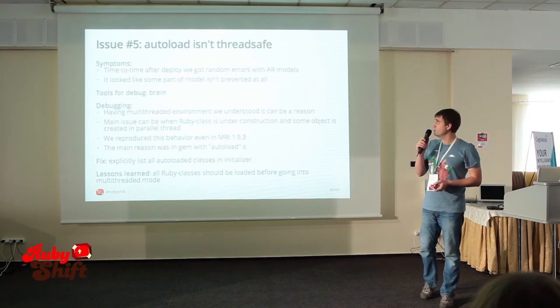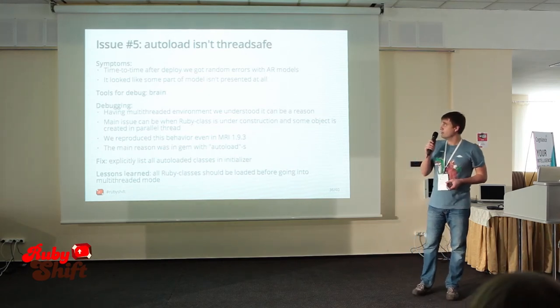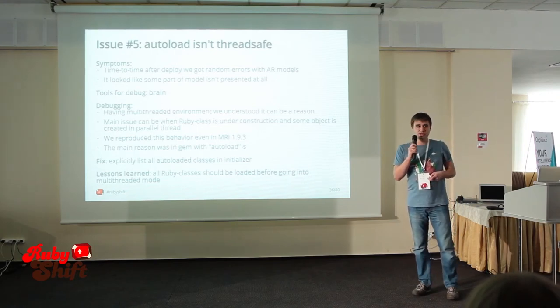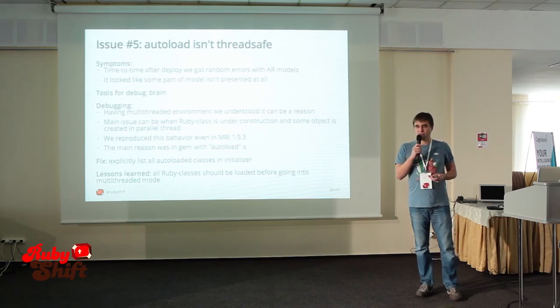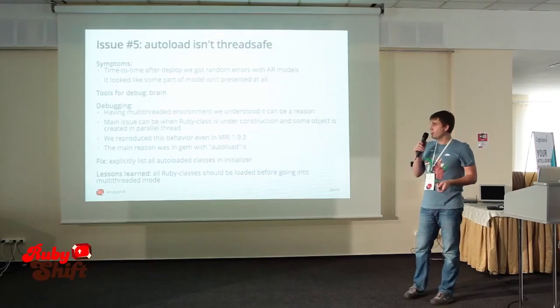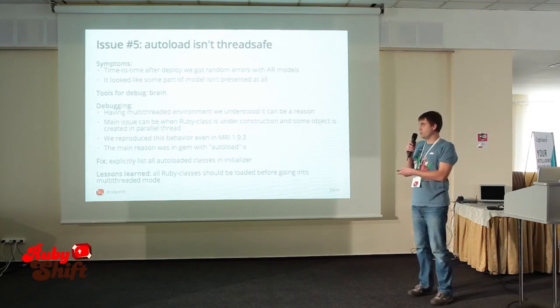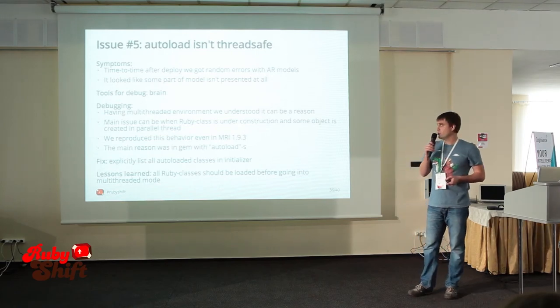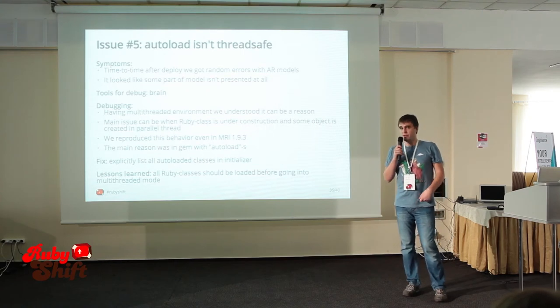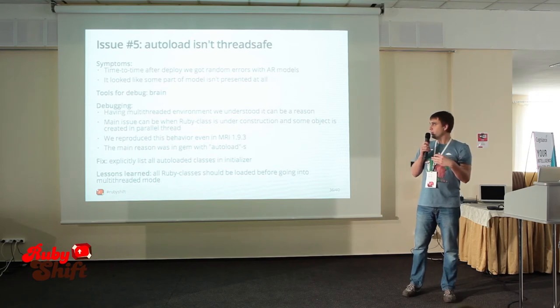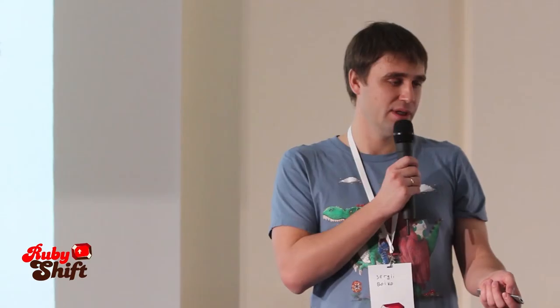The last issue I want to discuss is autoload. Please, if you write gems, don't use autoloads — it's totally unsafe. We got strange errors where our application would time to time throw random errors. We understood it could be because we have a multithreading environment: in one thread Ruby starts to initialize a class, while in a parallel thread it tries to create an object of that class, and that doesn't work properly. This can lead to very weird errors. We reproduced this behavior even in MRI, so it's not only a JRuby issue. To fix it, enumerate all classes loaded via autoload, and they will be loaded before you go into multithreading mode — in a Rails initializer.